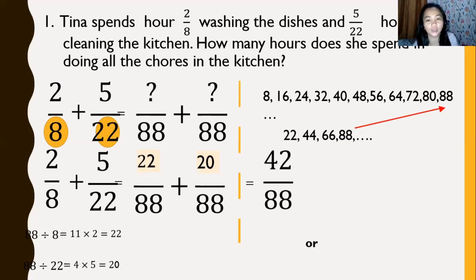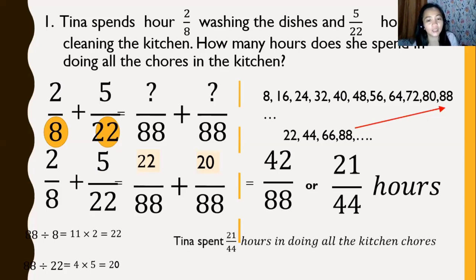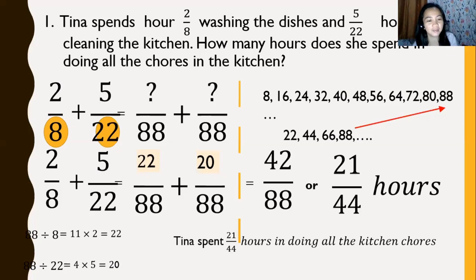Express the answer in lowest terms — they are both divisible by 2. The answer is 21/44 hours. Therefore, Tina spent 21/44 hours doing all the kitchen chores. That is problem number one.